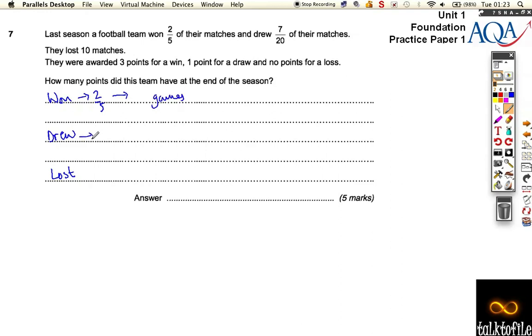Now the drawing, we know that they drew 7 20ths, but the same problem. If we knew what the total is, we could work it out, so we don't know how many games they drew. So what we do know is we don't know the fraction, but we do know that they lost 10 games.